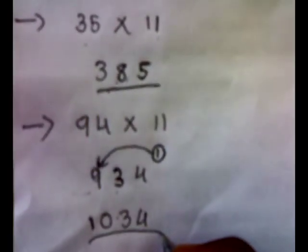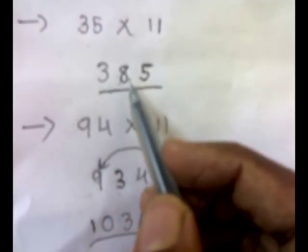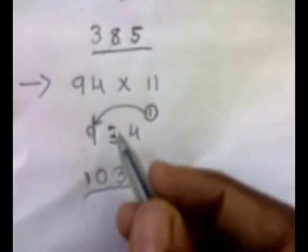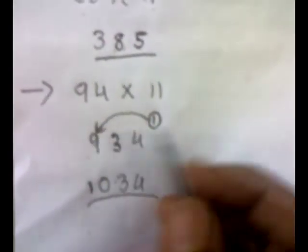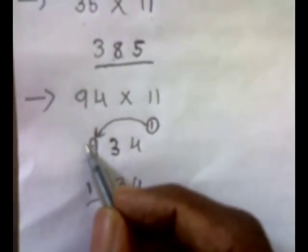So there are only two things to be remembered while multiplying by 11. It's so simple when there is no carry generated by adding the two digits, but when we have a carry by adding these two digits, just add the carry 1 to the leftmost digit.